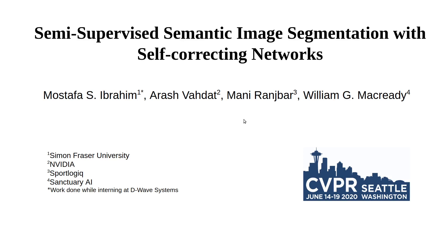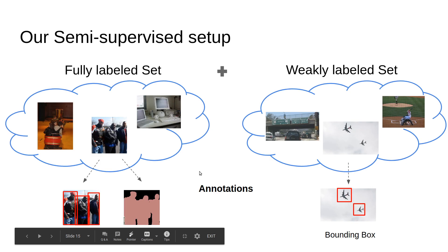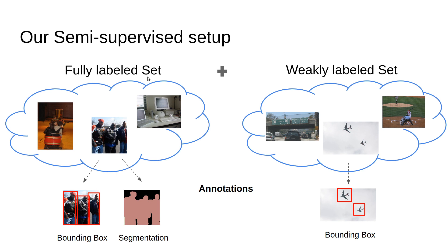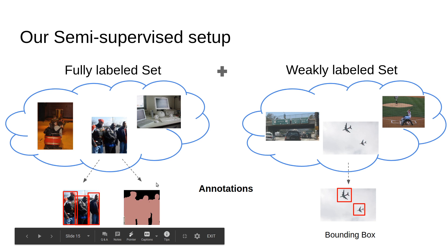This work represents our approach for semi-supervised semantic image segmentation with self-correcting networks. The work was done during an internship at D-Web Systems. We assume the data setup as follows: we have a fully labeled set with two kinds of annotations—bounding boxes for every object and segmentation masks for these objects.